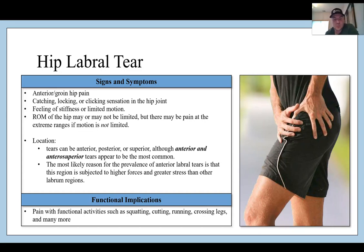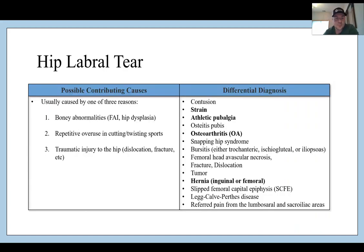Functional implications include pain with squatting, cutting, running, crossing legs, and many more. Hip FAI and labral tears are very common and hard to distinguish on a clinical exam — imaging helps, as does the mechanism of injury. Contributing causes are usually one of three reasons: FAI or hip dysplasia causing bony abnormalities, repetitive overuse and cutting or twisting sports, and traumatic injury to the hip. Differential diagnoses include FAI, contusion, strain, athletic pubalgia, osteitis pubis, osteoarthritis, and snapping hip syndrome.